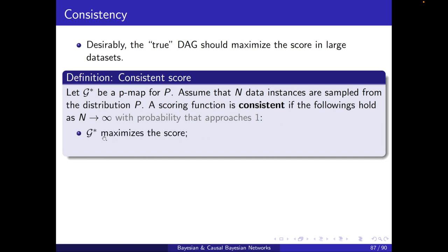G* maximizes the score, again as data size approaches infinity. And, all other structures that are not I-equivalent to G* will score lower. So, this basically means that for large enough data instances, the PMAP will maximize the score. And, no other score, which is not I-equivalent to G*, will have that maximum score. This is ideally what we want.